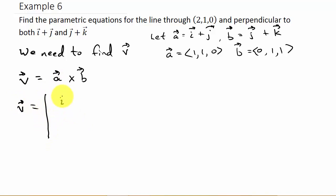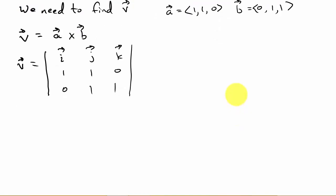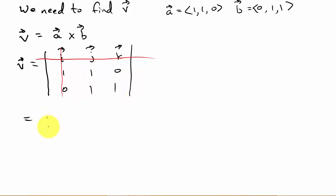Remember how to do the cross product? We set up i, j, and k. Then vector a: 1, 1, 0. And vector b: 0, 1, 1. For the i component, we take out that row and delete that column — it's the determinant of the 2×2. So that's one times one minus zero times one, which is 1 − 0, times vector i.